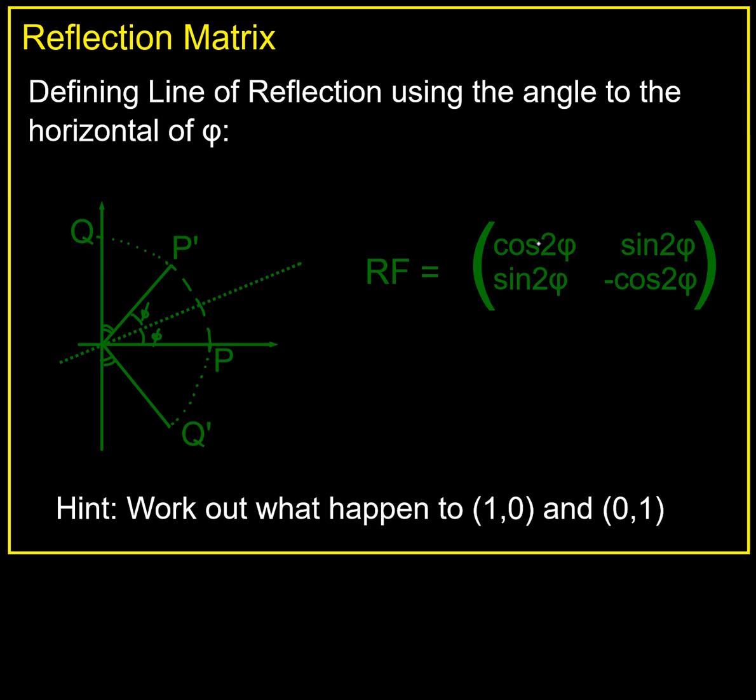Think of it as, you need to know that the phi is this angle down here. You need to know that that's phi, don't you? That one there. And if you ever need to remember how to do it, just remember, find out where the points (1,0) and (0,1) map to. So there you go. General reflection matrix.